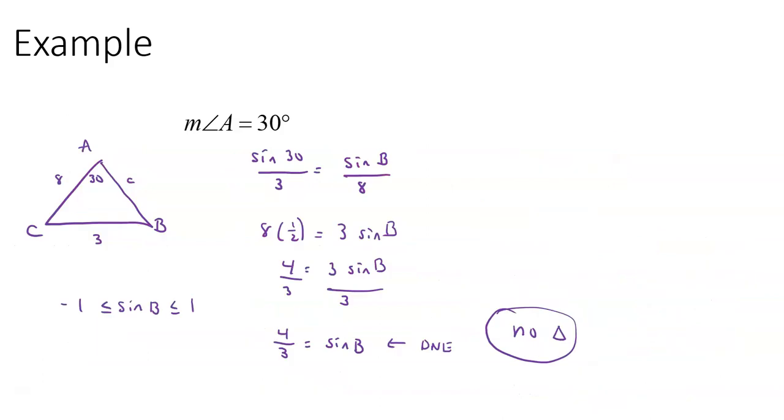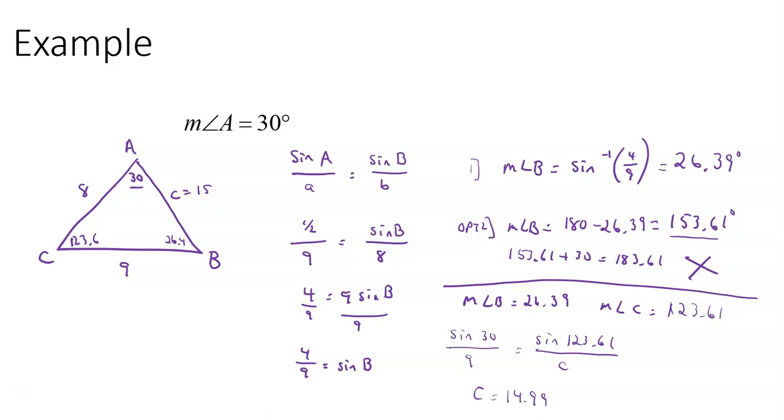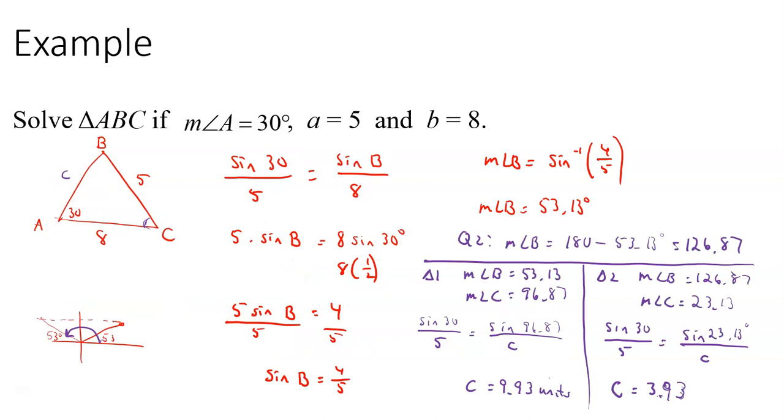If you remember, when we got a sine value that was greater than one, that made no triangle. If we got a sine value that was positive, in this case it only produced one triangle because the 180 minus that angle when you added it to the already given angle is more than 180. And then the other case where it gives us two triangles because they both work.